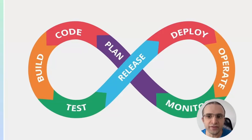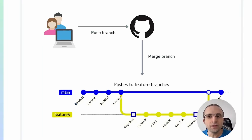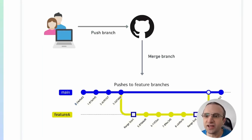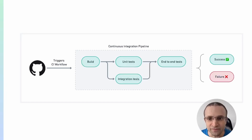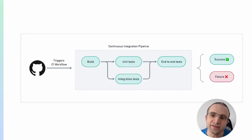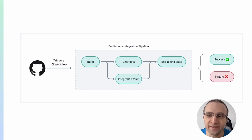For CI/CD to work, we need two things. First, developers merge their changes into the main branch daily. Second, each merge triggers an automated build and test sequence. The result of this process is either a success or a failure. The failure can be on the build step or any of the tests. In either case, the process stops until the errors are fixed. If the CI process succeeds, we can move into continuous delivery.